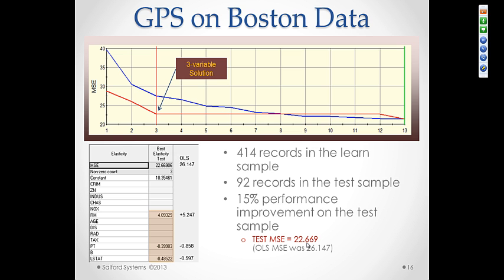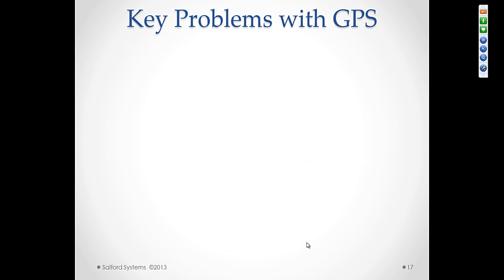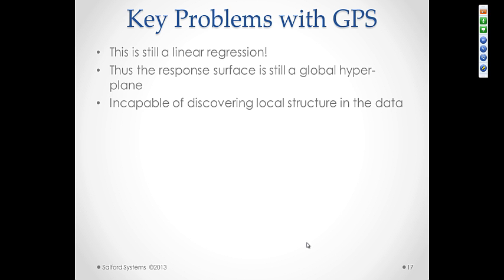Again, to reiterate it, on Boston housing data set, that's probably not a dramatic improvement because the data set itself is more or less conventional. 13 variables, 500 observations. But if you go into more realistic settings when you have way more predictors, and especially in the cases when you have wide data sets, the advantages of regularized regression will start emerging more and more. Does it mean that we solved all of the regression problems in the world? By no means no. There are key problems with GPS. And the number one problem is that this is still a linear regression.